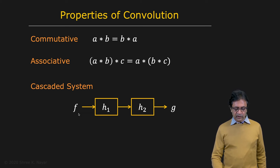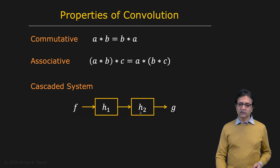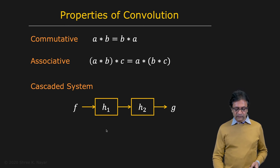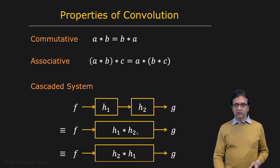So you have the input going in here. The first system performs a convolution with H1, and then convolution with H2, and then you get the output. Rather than performing these two convolutions in sequence, you can actually convolve H1 with H2 and create a single convolution that you apply to the input to get the output. It could be H1 convolved with H2, or H2 convolved with H1 as per the commutative property of convolution.